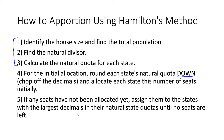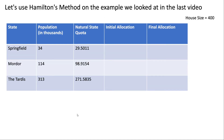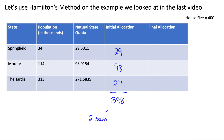Now let's look at an example. We'll use Hamilton's method on the example from the previous video. We have our populations and the quotas we calculated last time. For our initial allocation using Hamilton's method, we first get rid of all the decimals. So Springfield will initially get 29 seats, Mordor will initially get 98 seats, and Tardis will initially get 271 seats. Adding all of these up gives 398, which tells us there are two seats we still need to allocate since we have 400 seats total. According to Hamilton's method, the states with the largest decimals in their natural quotas get the extra seats.